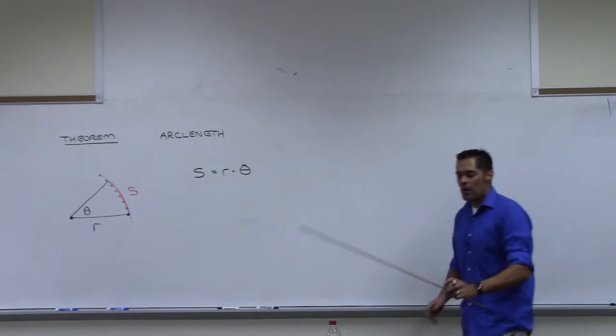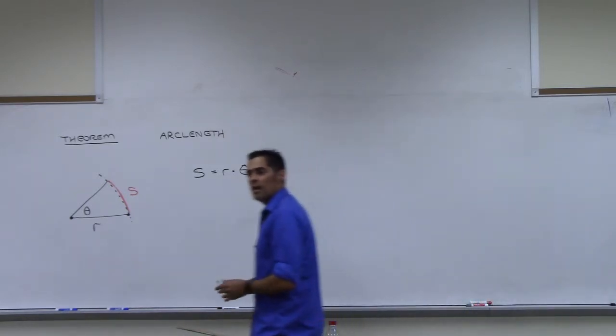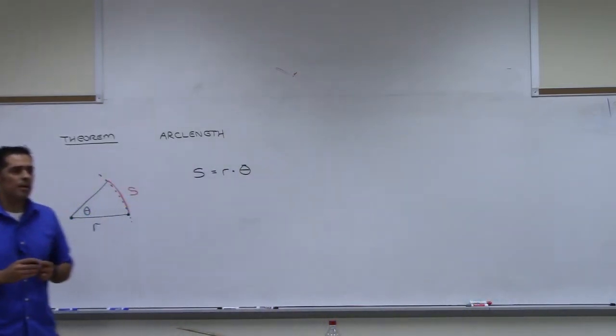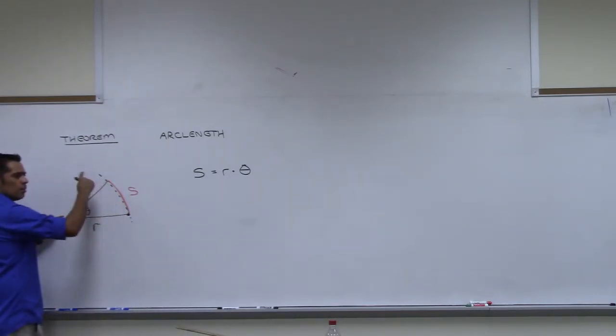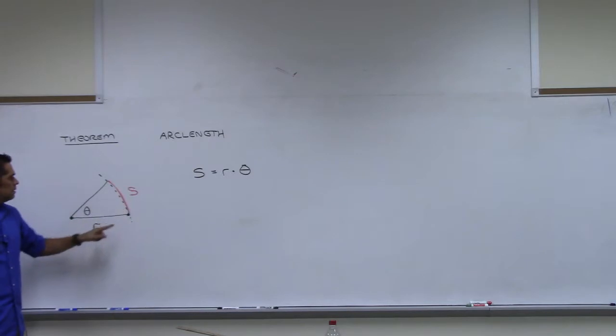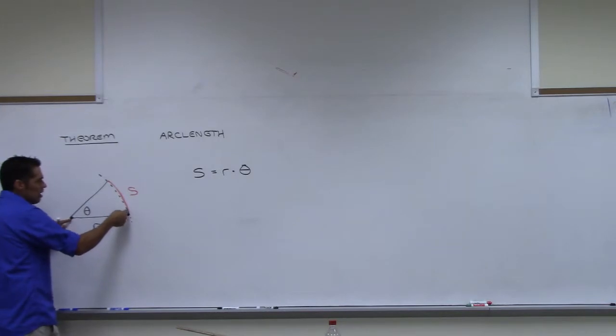Do you remember how I tried to convince you what one radian was? When I was trying to draw this on the board earlier, what was I forcing S to be? The length of R. I wasn't drawing the angle. I drew out R and then I tried to draw R over here again. That forced an angle to happen.